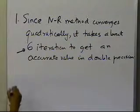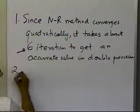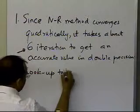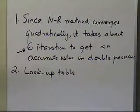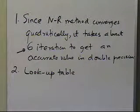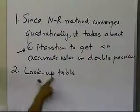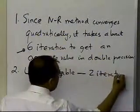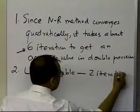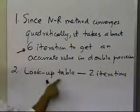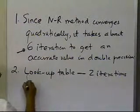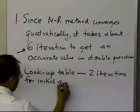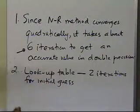Again, this seems to be high, but there are other things which you can do. You can have a lookup table — there's a reference given in the documentation connected to this video. You can do a lookup table, and then you need only two iterations. So if you have a lookup table for the initial guess, you need only two iterations.